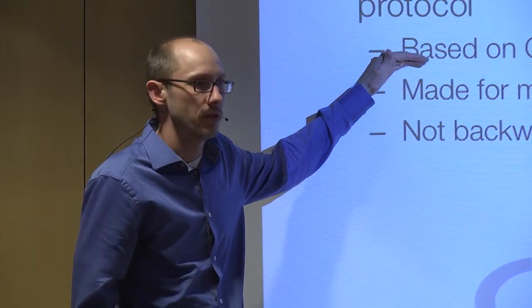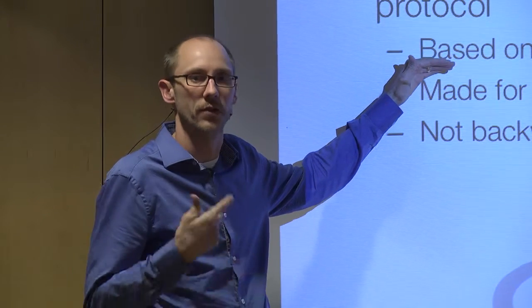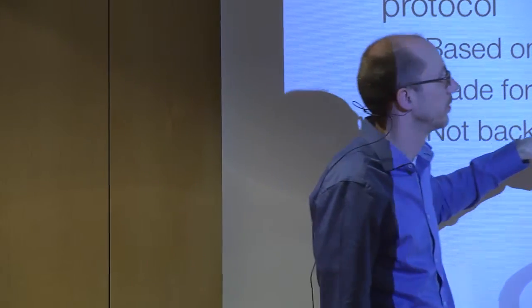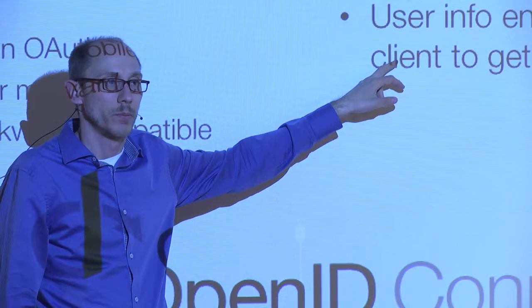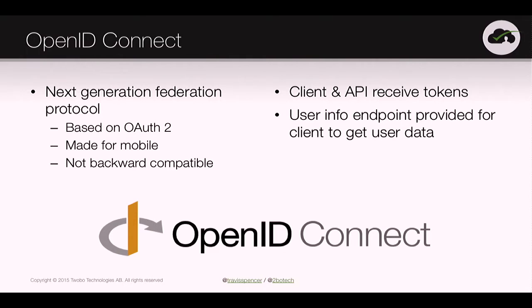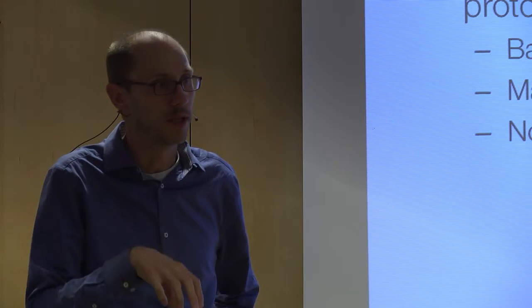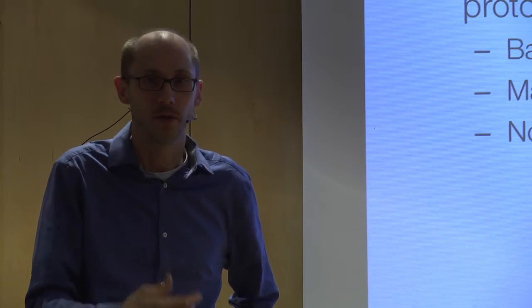So OpenID Connect came along and said, rather than 50-plus ways of doing this, we'll have a standard for adding authentication and identity on top of OAuth. OpenID Connect is not the same as OpenID 2; it's more like SAML 2 with the same rigor and security properties. By being built on top of OAuth 2, you get a two-for-one: deploy OpenID Connect and you get authentication and identity, plus API security via OAuth 2. Its two important innovations are the user info endpoint and the ID token.